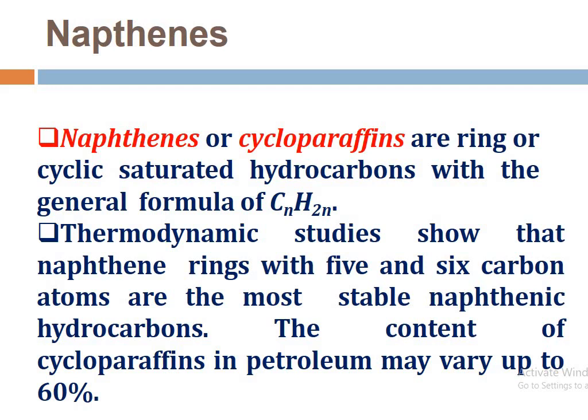The second series is naphthenes, or cycloparaffins — ring or cyclic saturated hydrocarbons with the general formula CₙH₂ₙ. Thermodynamic studies show that naphthene rings with five and six carbon atoms are the most stable. The content of cycloparaffins in petroleum may vary up to 60%.